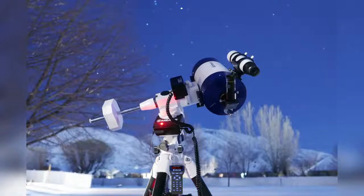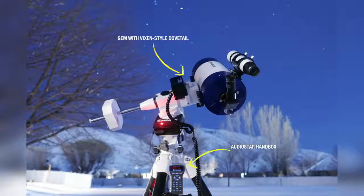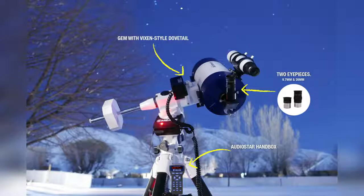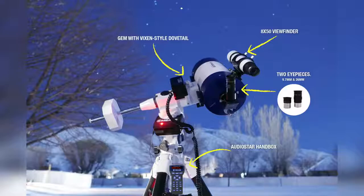Each LX85 package comes with a sturdy German equatorial mount, equipped with a Vixen-style dovetail receiver and AudioStar handbox. Excluding Apos, each LX85 comes with two eyepieces, a 9.7mm and 26mm Superplossl, and an 8x50 optical viewfinder with crosshairs.